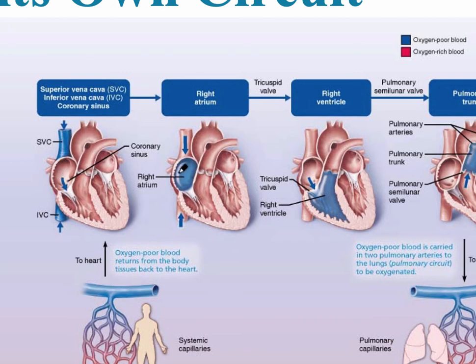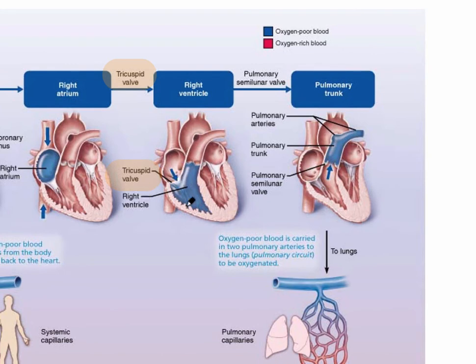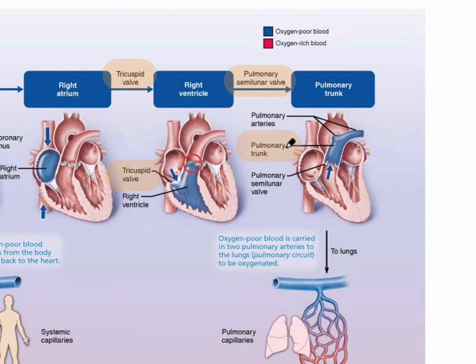From the right atrium, blood goes into the right ventricle through the tricuspid valve, which is the right atrioventricular valve. The purpose of the right side of the heart is to deliver deoxygenated blood to the lungs to pick up oxygen. Blood leaves the right ventricle through the pulmonary semilunar valve, located in this area, and goes out into the pulmonary trunk, which then goes into the pulmonary arteries. Arteries always take blood away from the heart.